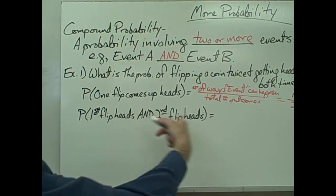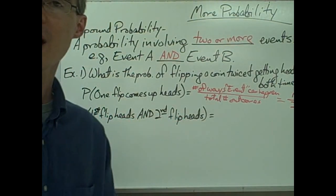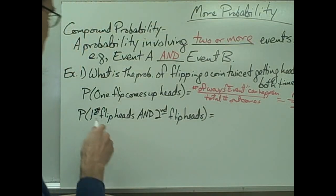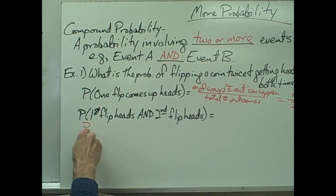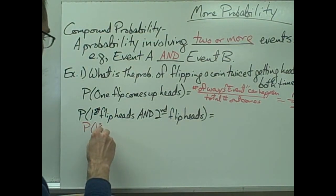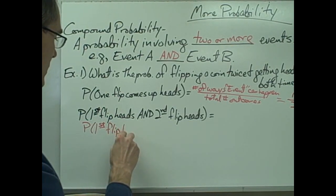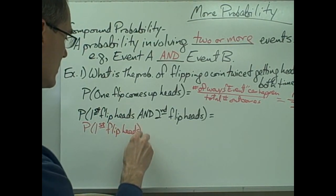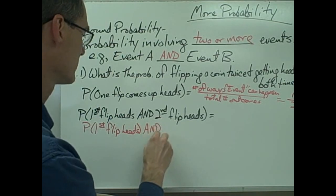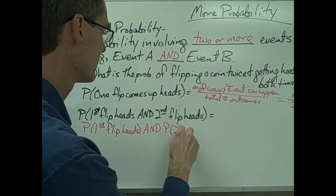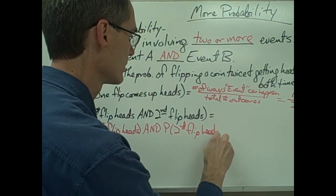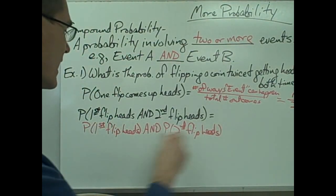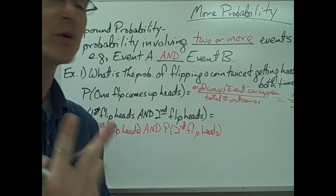If I want to know the probability of flipping a coin twice and having it come up heads both times, this is a compound probability. I can write this probability statement as: the probability that the first flip is heads AND the probability that the second flip is heads. This highlights the fact that I'm talking about two events here.